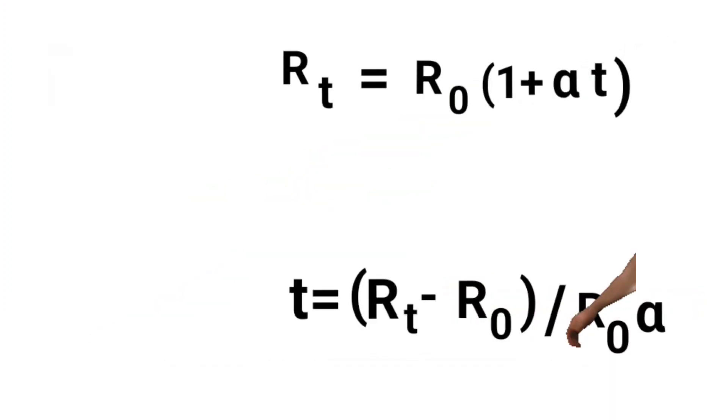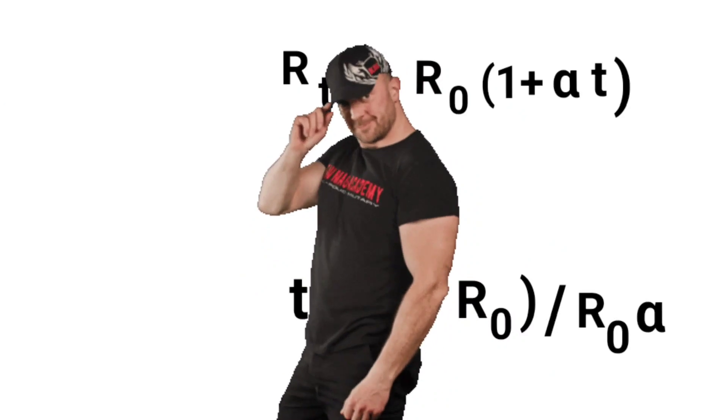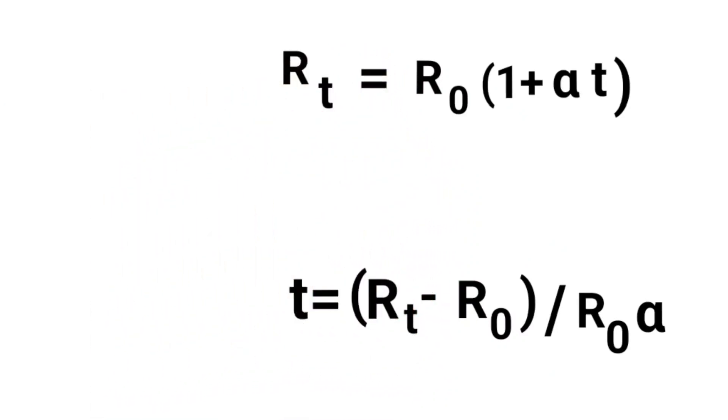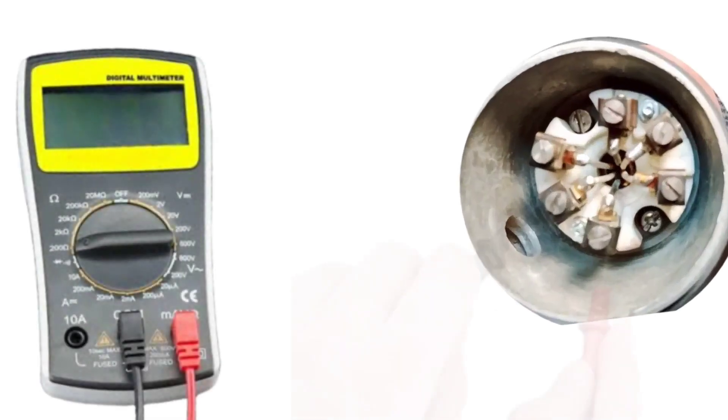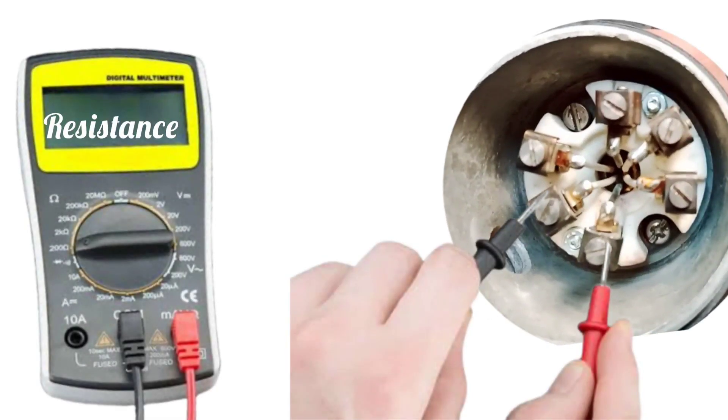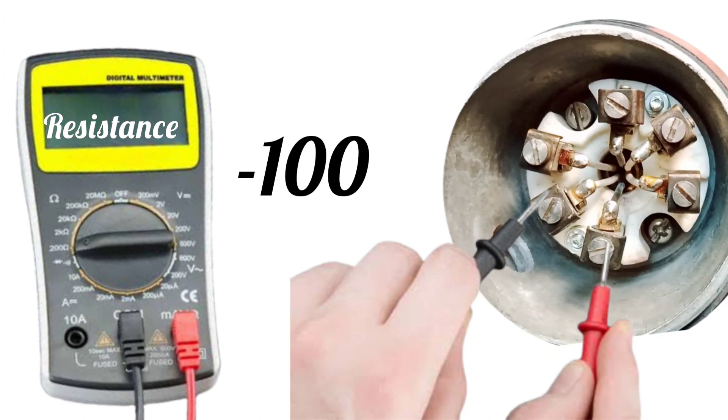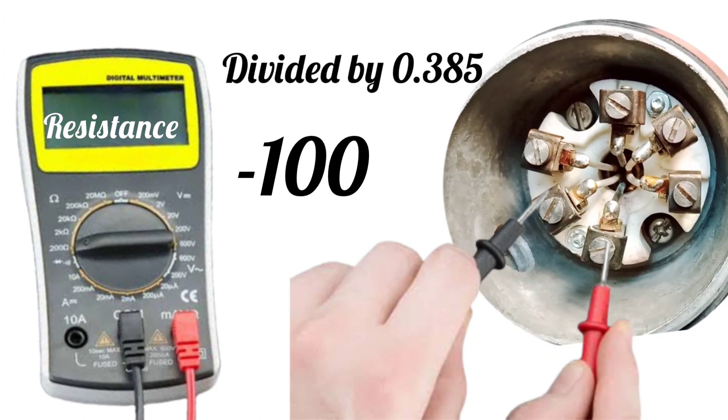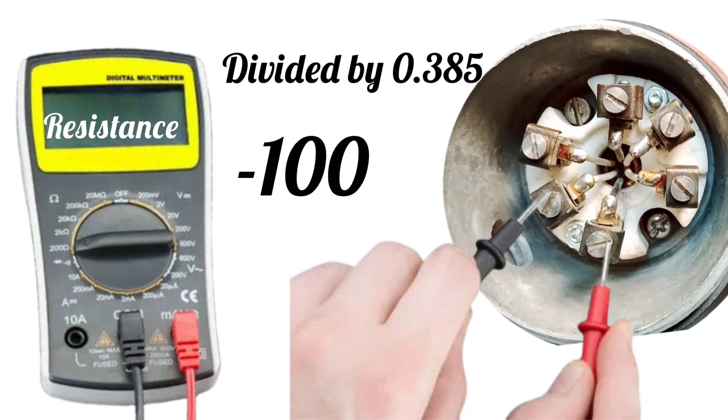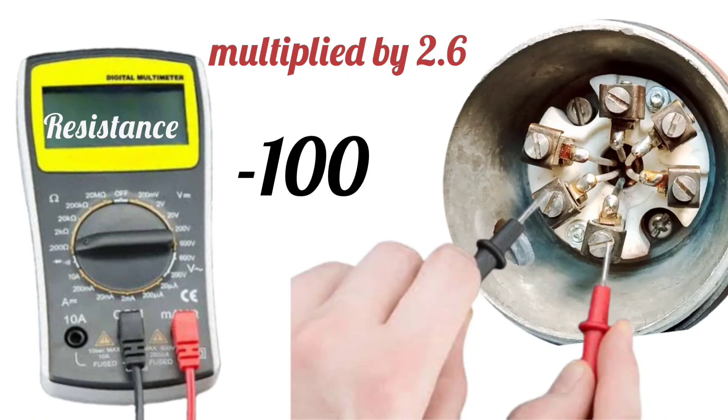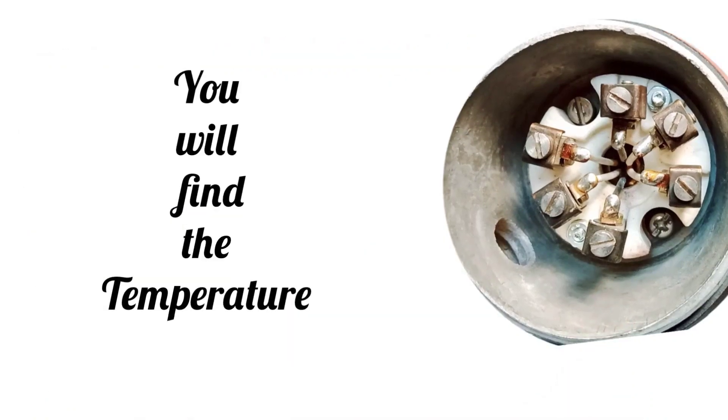Let us now understand the formula in easy language. There is no need to memorize long and elaborate formulas. As much resistance as being shown in the multimeter, minus 100 has to be done, and that has to be divided by 0.385, or multiply by 2.6. You will find the temperature.